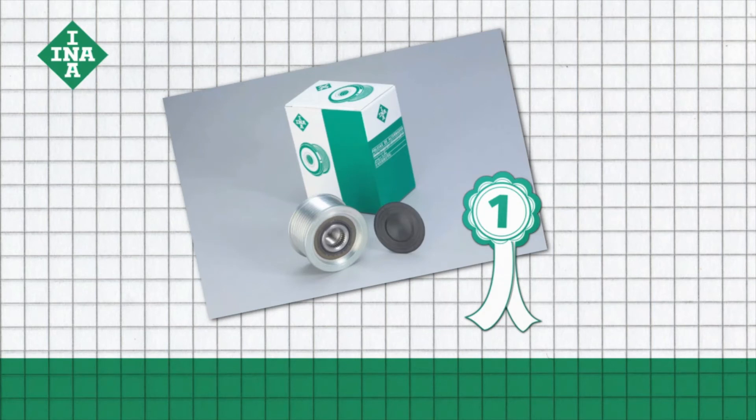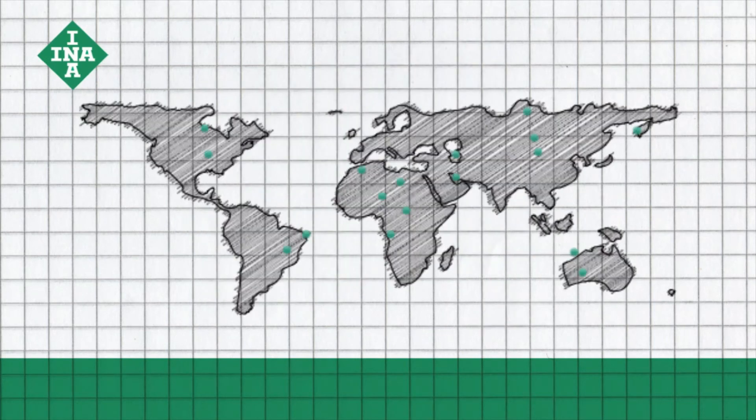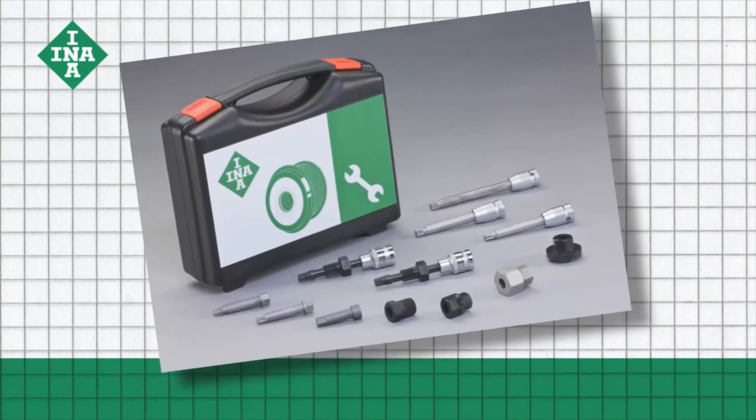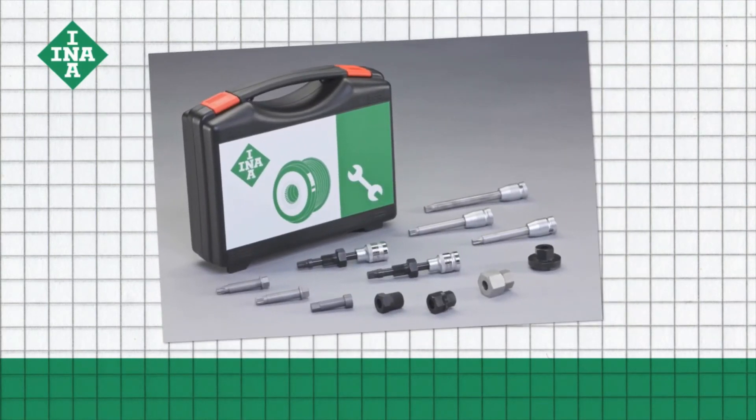We invented the overrunning alternator pulley in 1995 and have since produced more than 120 million of them. In order to professionally install the OAP, this complete toolbox includes the required tools for all current vehicle models.